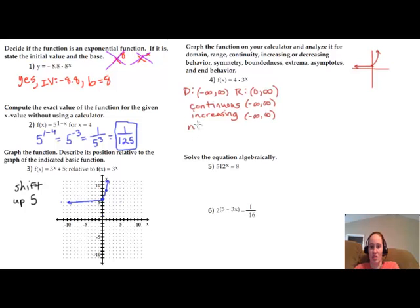Symmetry, there is no symmetry, or at least not any kind that we care about for this. It is bounded below because it's like there's a floor underneath our graph where we're never going to get values underneath that floor. So it's bounded below. There are no extrema because it doesn't ever switch from increasing. It's increasing the whole time.